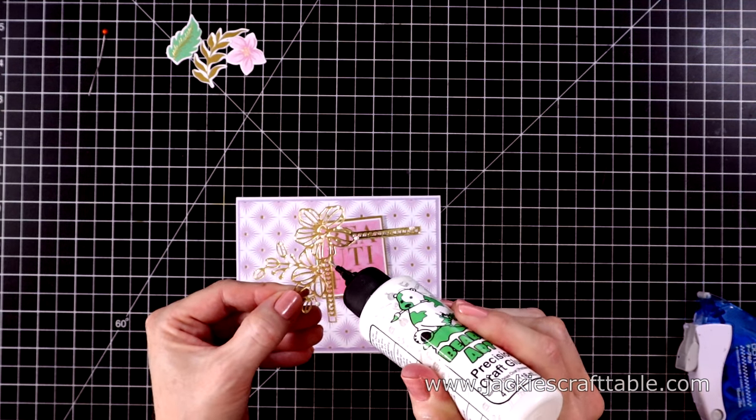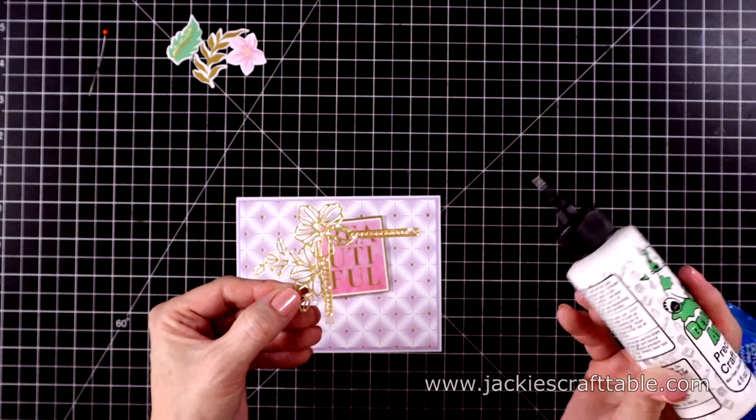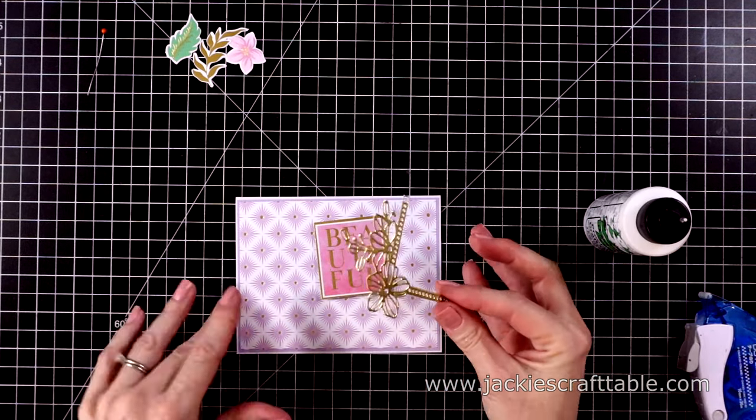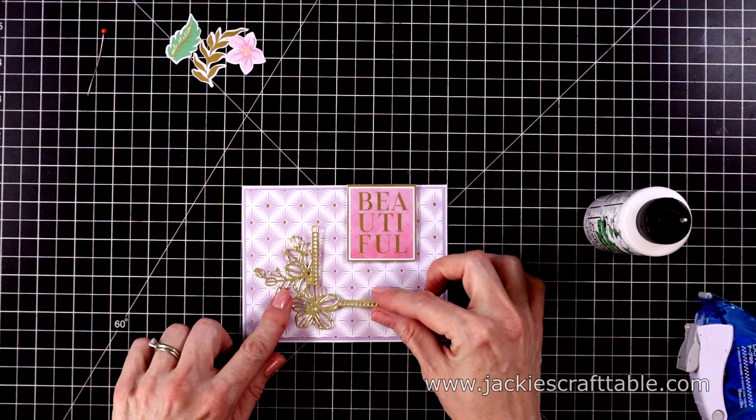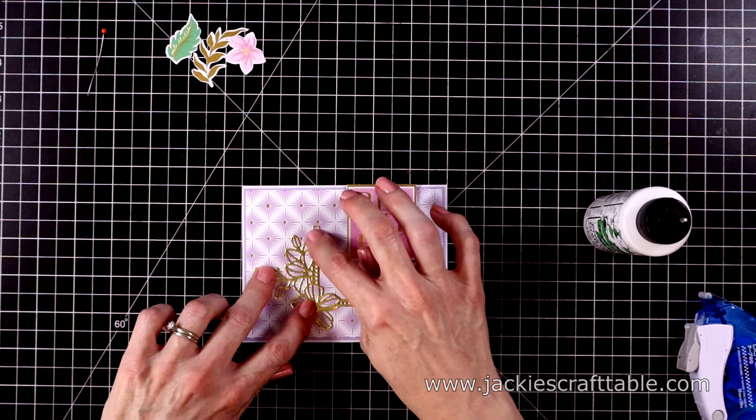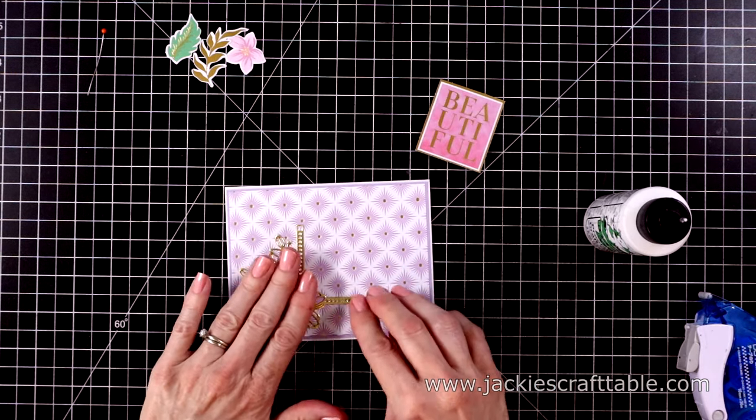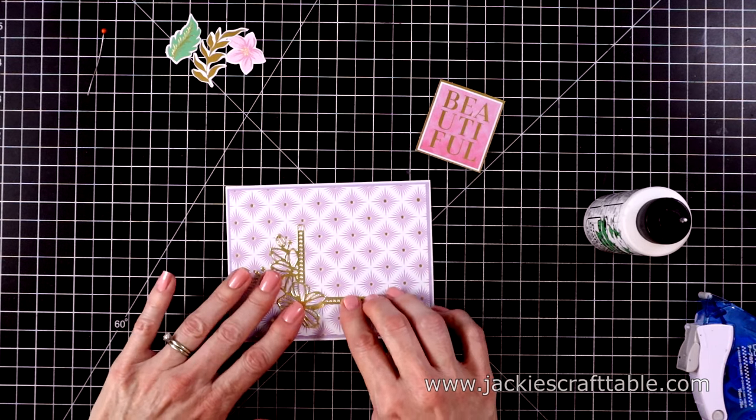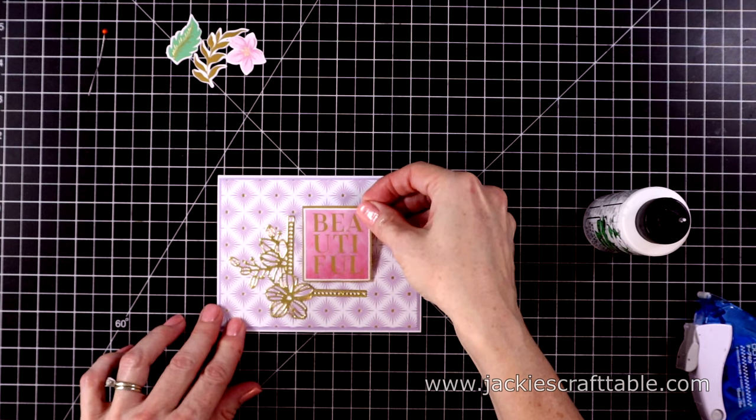The little centers in the diamonds are gold. And then I cut out the die with some of the gold cardstock. I'm going to put this down in the corner. This is going to be a landscape card. I'll just glue that down flat. I popped up the sentiment with some foam pieces. I'll place that right next to the frame.